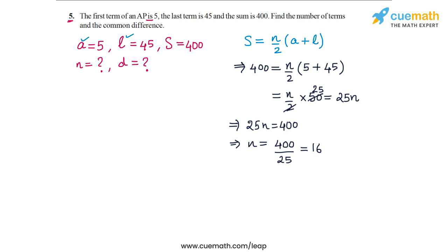And now we can use the value of N and we can find the value of D. For that we are going to make use of the relationship Nth term in terms of A, N and D. So Nth term is A plus N minus 1 times D.